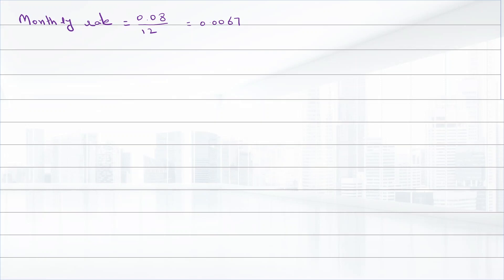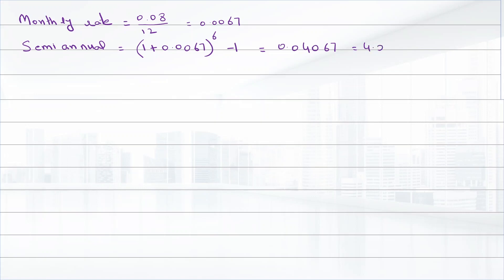To get the semi-annual interest rate, we use the effective annual rate equation, but instead of using 12 months as the exponent we use six months. The effective semi-annual rate is (1 + 0.00667) raised to the power of six, minus one — that equals 0.04067, or 4.067 percent.